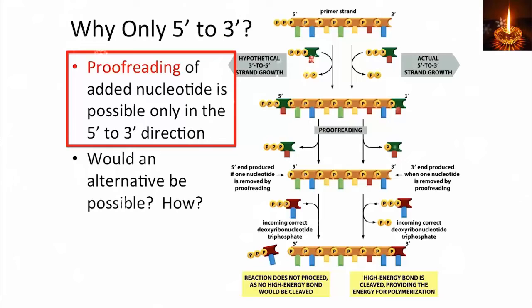So the proofreading process only works in the 5' to 3' direction. But is there an alternative? Can you think of a way that you could actually grow 3' to 5' instead of 5' to 3'? What would make it work?